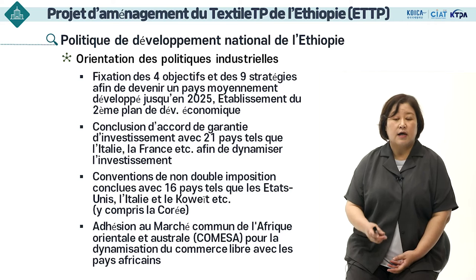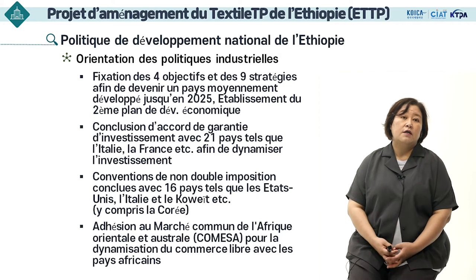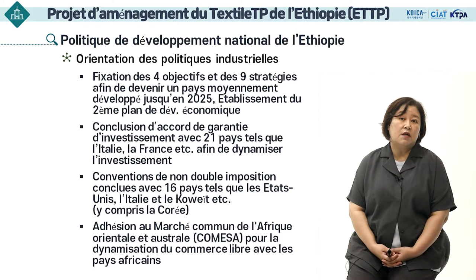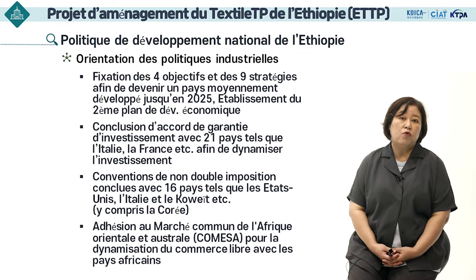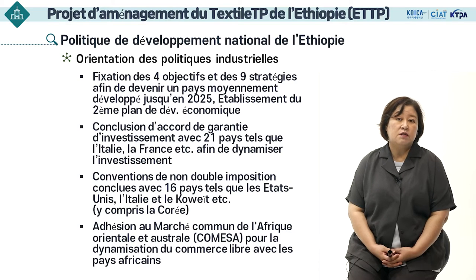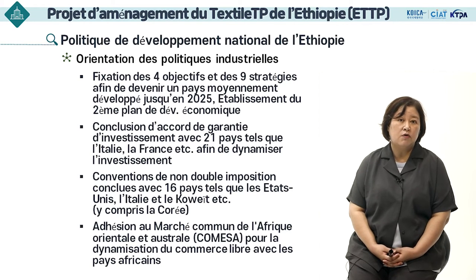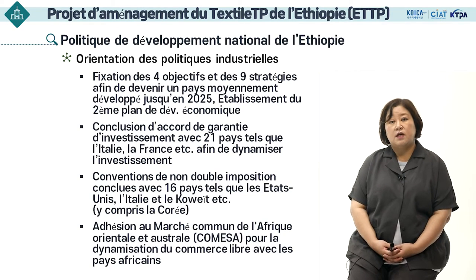Pour stimuler les investissements étrangers, l'Éthiopie a conclu des accords de garantie d'investissement avec 21 pays dont l'Italie et la France, et des conventions de non-double imposition avec 16 pays tels que les États-Unis, l'Italie, le Koweït et la Corée. Pour promouvoir le libre-échange avec les pays africains, la Corée a rejoint le marché commun de l'Afrique orientale et australe.